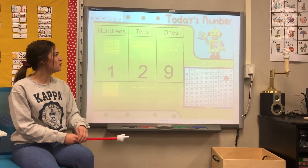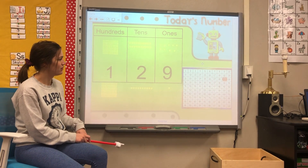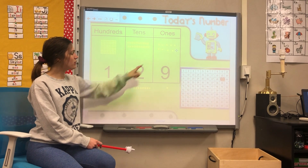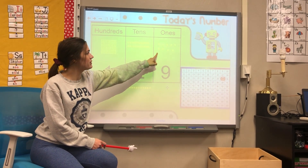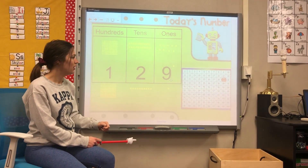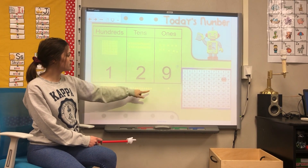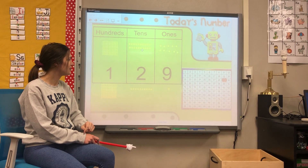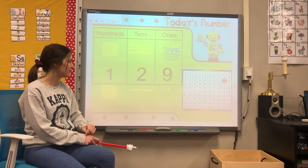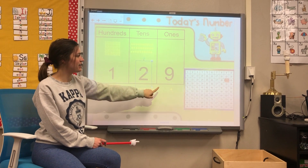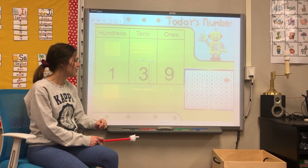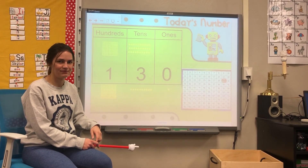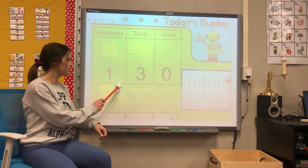We're going to add one more to our number today. What's one more? We're going to add one block. Now we have 10 blocks, so what do we need to do? Good — we need to add another stick to our tens, and we're going to get rid of all of these. And that's going to give us 130. Our number today is 130.